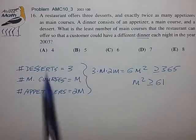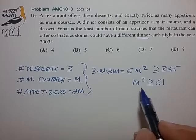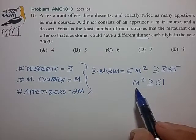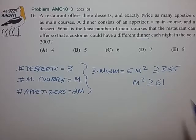And it's kind of implied from this since we only have integer possibilities for appetizers and main courses that M has to be an integer. So we're looking for the smallest possible integer such that M squared is greater than 61. So we just have to kind of think about the squares of integers.